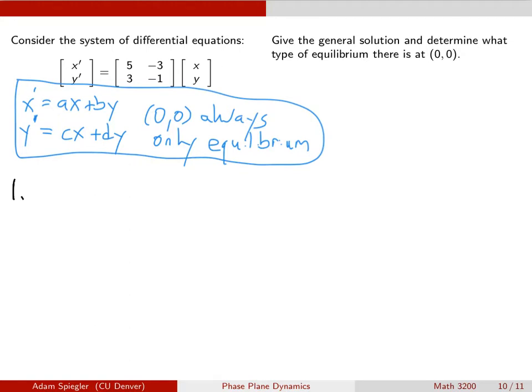So what we have here would be our characteristic equation would be what we get when we take the determinant of the matrix 5 minus lambda, minus 3, 3, minus 1 minus lambda, and we set that equal to 0.